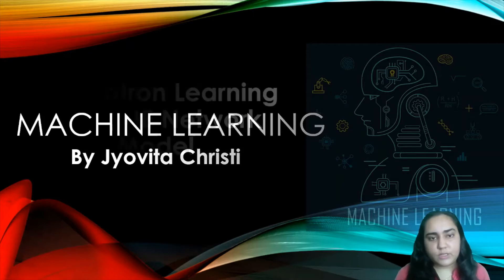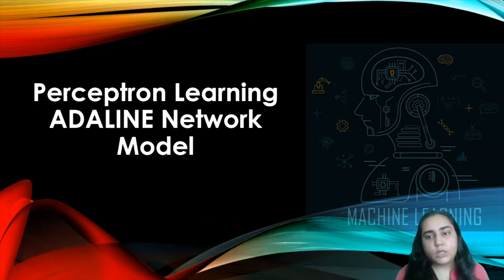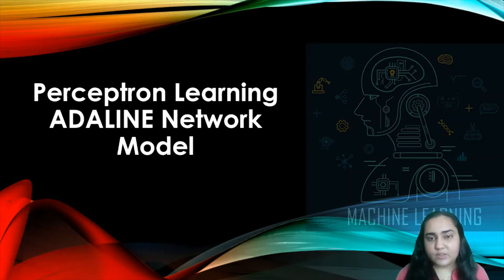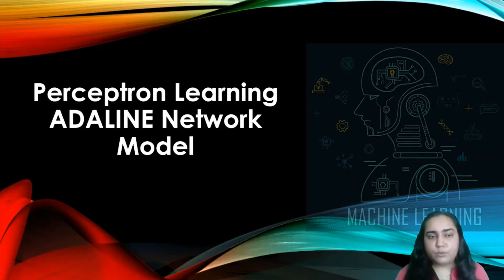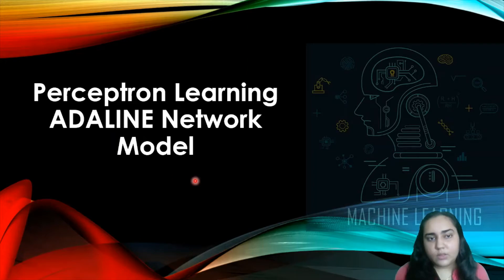Hello and welcome back to Machine Learning. I'm Javita Krusty and in this video we are going to continue learning about early models of neural networks. In one of the previous videos I introduced the McCulloch-Pitts model, a very basic and old neural network model. We also studied Rosenblatt's perceptron with one layer. Today we'll refresh that quickly and then proceed towards perceptron learning. We'll also talk about the ADALINE network model.